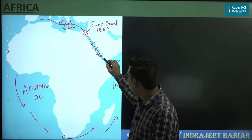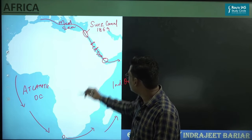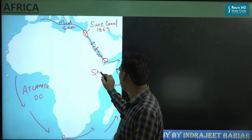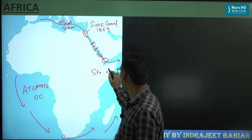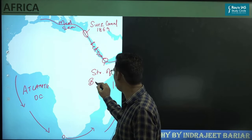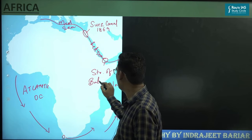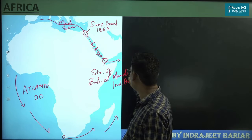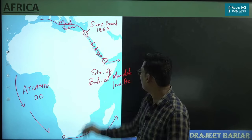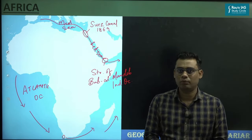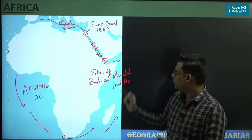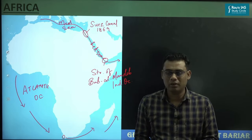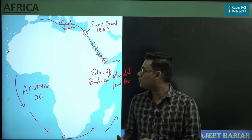Towards the southern end of the Red Sea, we find what is called the Strait of Bab el-Mandeb. So the Strait of Bab el-Mandeb is on the southern end of the Red Sea, and towards the northern end of the Red Sea we have the Suez Canal.